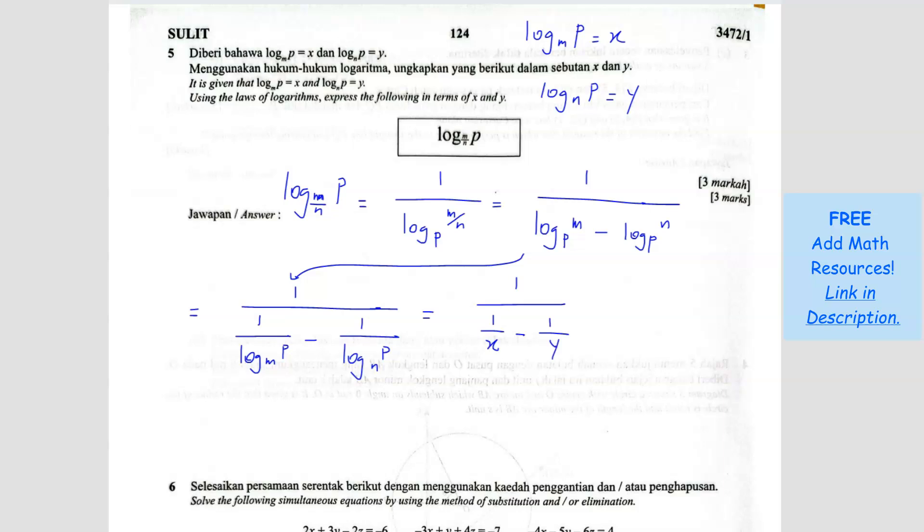So now since they are fractions here, we can combine to become one fraction. So it's times Y, make the denominator the same, times X, times X. So when it is the same, it becomes 1 over Y minus X over XY.